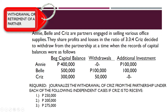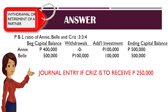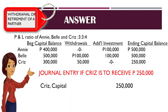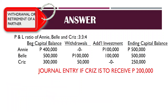The requirement is to prepare the journal entry to record the withdrawal of Chris under each of the following independent cases: if Chris is to receive $250,000 (first case), $200,000 (second case), and $275,000 (third case). Please compare your answer. Did you get it right? For the second scenario, where Chris receives $200,000, compare it to the book value of $250,000 — she will receive less than book value.